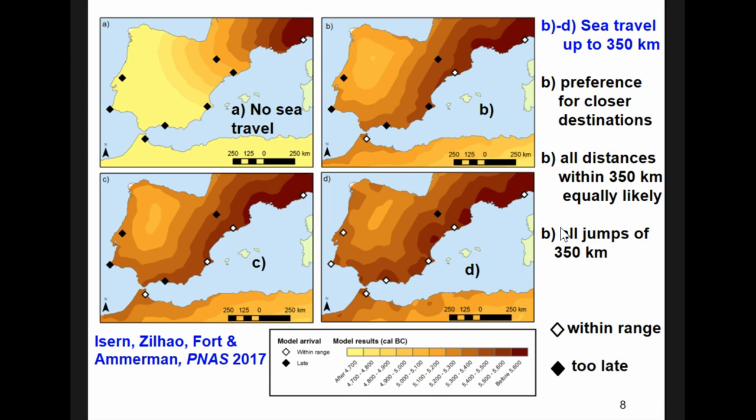The black diamonds mean that in these sites, which are the earliest regional sites of the Neolithic, the simulated front arrives too late. So, if there is no sea travel, if there is only land travel, the arrival is too late everywhere.